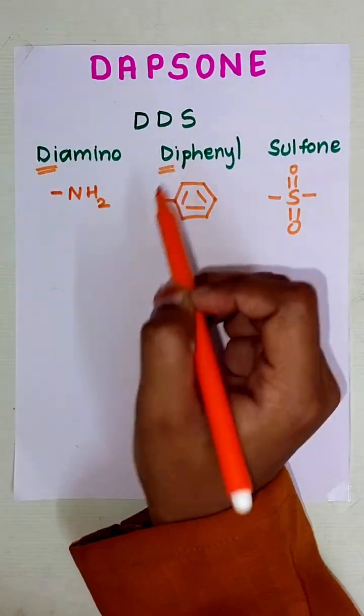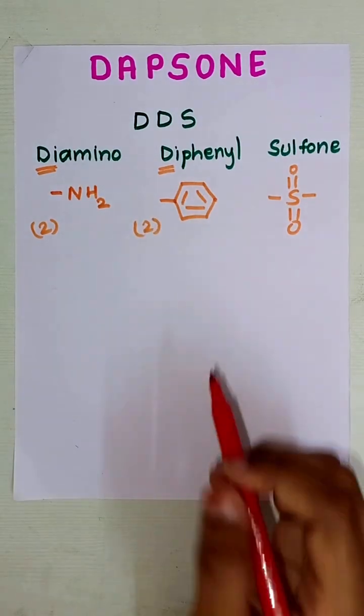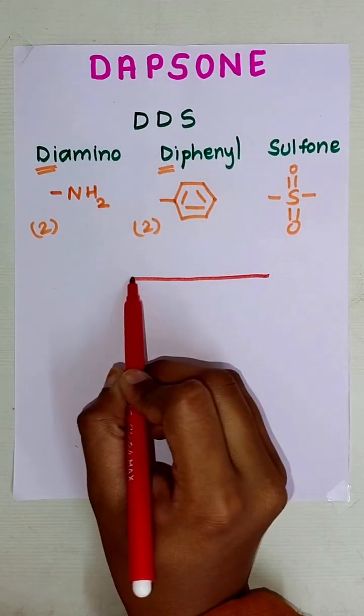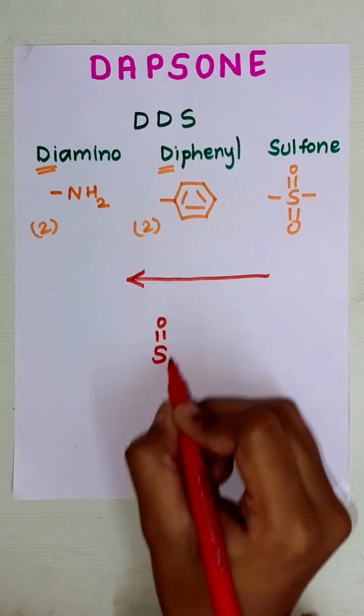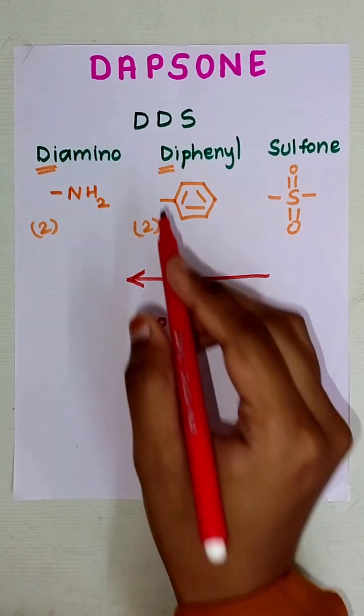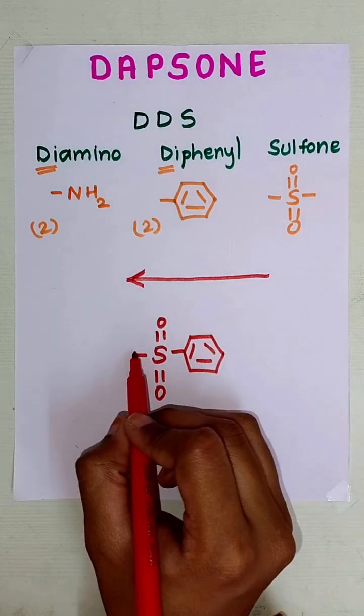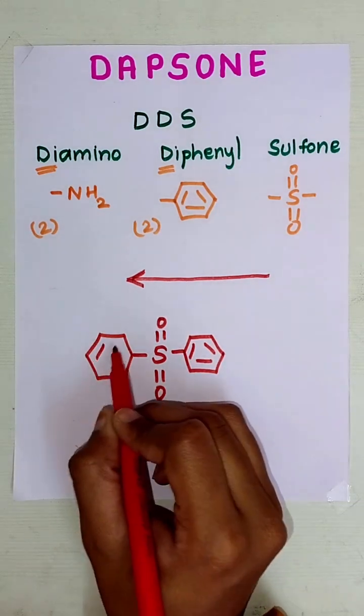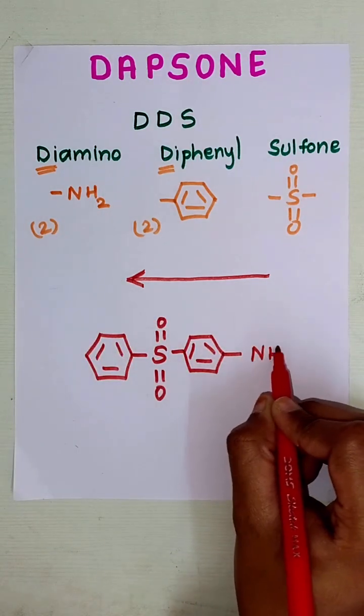In amino and phenyl we have di, that means there are two amino and two phenyl groups. Let's make our structure by going backwards. That is, we'll draw sulfone group first, S double bond O, then we have diphenyl, so one phenyl is at this side and another phenyl is at this side.